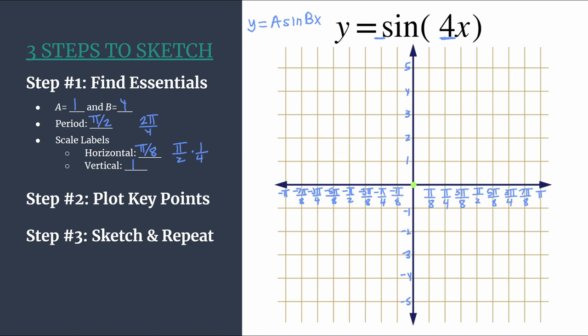At our next horizontal tick mark to the right, pi over eight, we'll put a maximum, and to know the y-coordinate, just use the value of A, so that's one. Next in the pattern is another zero, and that'll happen at your next horizontal tick mark moving to the right, so at pi over four. And then we'll finish out this pattern with a minimum, and that'll happen at your third tick mark to the right of the origin, so at three pi over eight, and for the y-coordinate you just use the opposite value of A, so negative one.